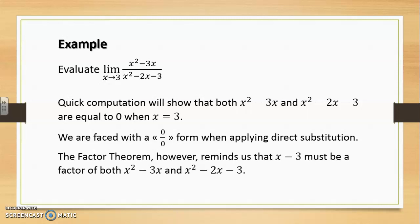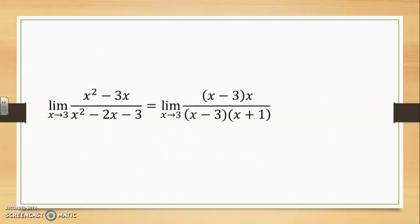The factor theorem however reminds us that x minus 3 will definitely be a factor for both of these expressions. So factoring at the numerator by using simple factoring and at the bottom by using the sum product method, we can find x minus 3 as a common term. And through cancellation, we then have a reduced limit as x approaches 3 for the rational function x over x plus 1 to compute. This expression can be calculated by direct substitution to provide a result of 3 over 4.